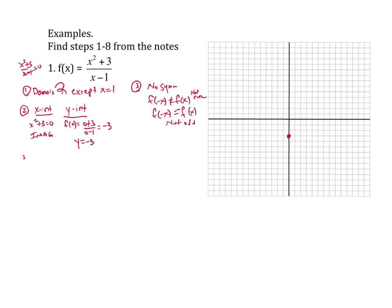As for the limits and horizontal asymptotes, I take a look at the highest power on top versus the bottom. The highest power on top is greater than the highest power on the bottom, so there is no limit at infinity — the limit is infinite — so there is no horizontal asymptote. For the vertical asymptotes, I set the bottom equal to zero: x minus one equals zero, so x equals one is my vertical asymptote. I can go ahead and put that in there right now.